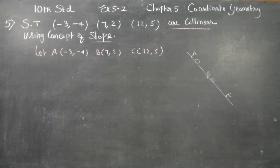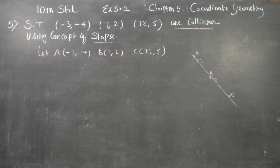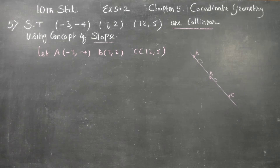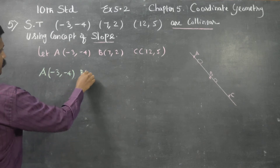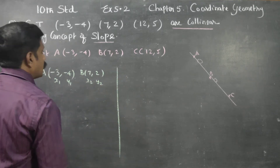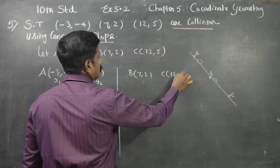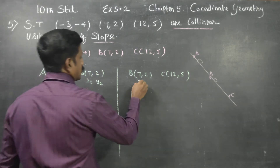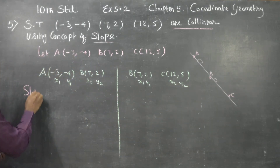First, I will assign coordinate names for each point: A point, B point, and C point. After assuming names for the points, I am going to find the slope of AB. A is equal to (-3, -4), that is (x1, y1). B is equal to (7, 2), that is (x2, y2). Then for slope of BC, B point and C point are assigned as (x1, y1) and (x2, y2) respectively.